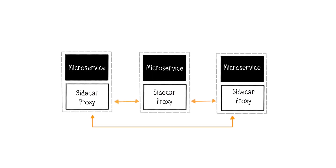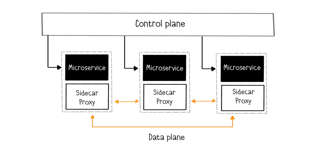Firstly, each microservice is associated with a sidecar proxy, usually deployed in the same container. This concept of sidecar means these network proxies run alongside each service, rather than within the services. This sidecar, in front of each microservice, then becomes a mandatory passage for all incoming and outgoing calls to the service, and it will intelligently direct requests to other proxies. The data plane is a network of proxy sidecars attached to services.